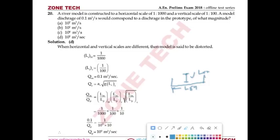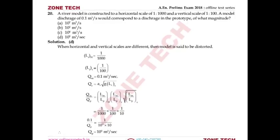The discharge ratio Q_R = L_r × L_v × velocity relation = L_r × L_v × √(L_v). When solved, Q_P value comes out as 10⁵ m³/s. Answer is D.